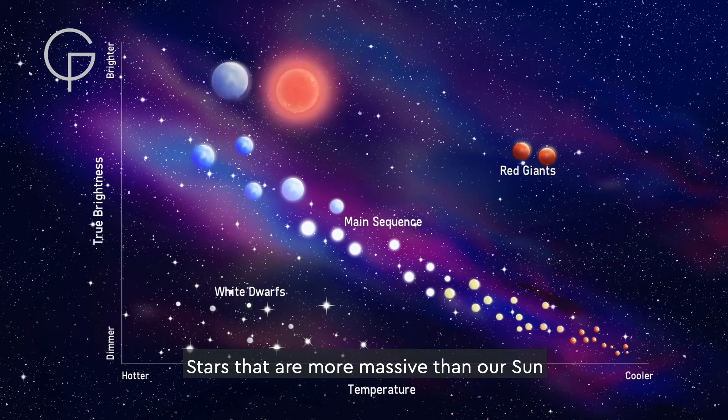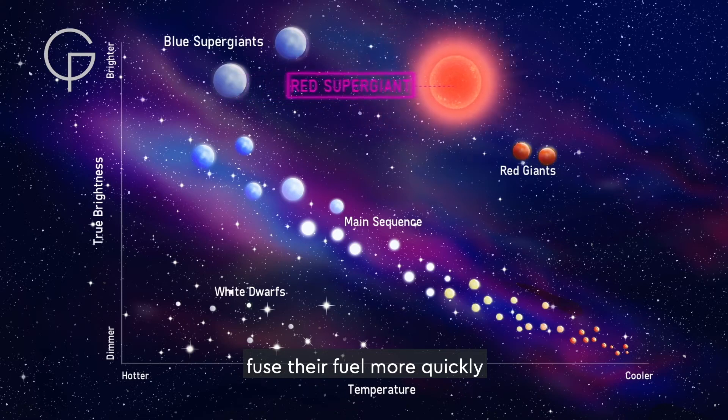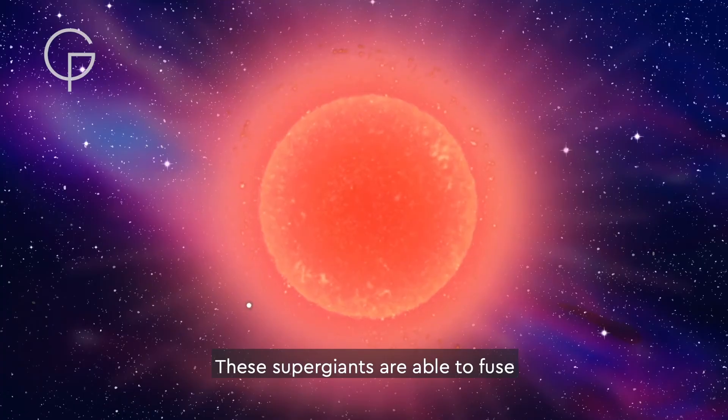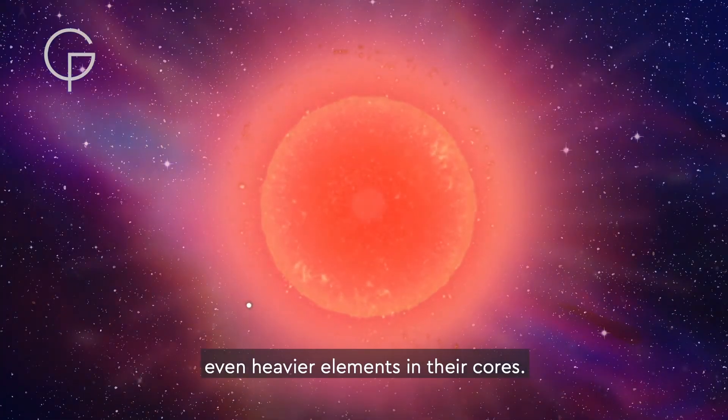Stars that are more massive than our Sun fuse their fuel more quickly, and evolve off the main sequence to become red supergiant stars. These supergiants are able to fuse even heavier elements in their cores.